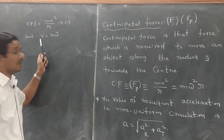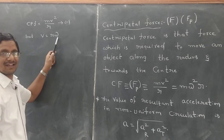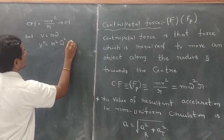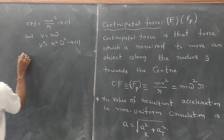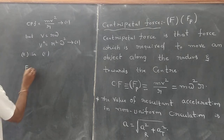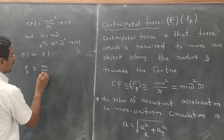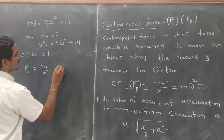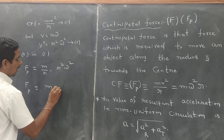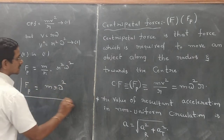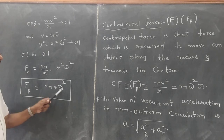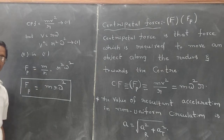V is equal to R omega — there is a relationship between linear velocity, radius, and angular velocity. Therefore, V squared equals R squared omega squared. Substituting equation 2 into equation 1: F centripetal equals M times R squared omega squared by R, therefore F equals M R omega squared. Like that, the centripetal force equation has been derived.